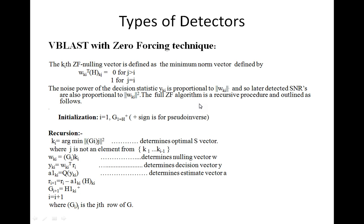The full zero-forcing algorithm is a recursive procedure. Initialization: i = 1, G(1) = pseudo-inverse of H (the channel transfer matrix). The recursion: determine the optimal ordering vector ki as the argument of the minimum value of ||G_ij||^2 (the variance norm of G_ij), where j is not an element of {k1, …, k_{i-1}}. The nulling vector W_ki equals row k_i of G_i.